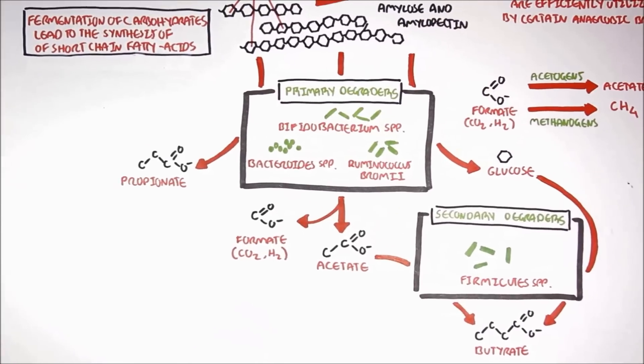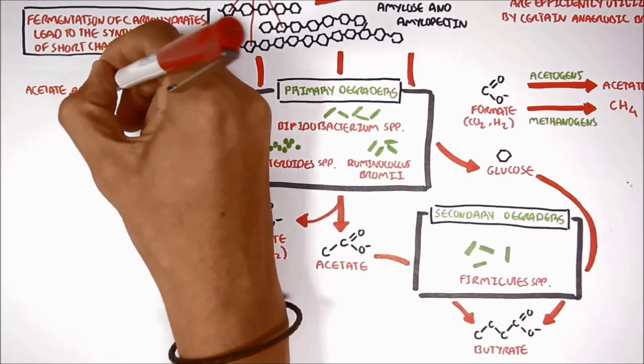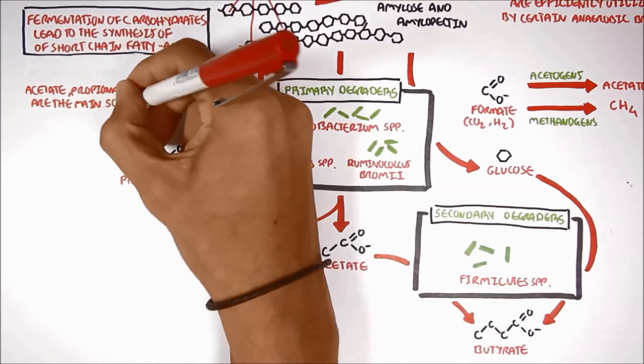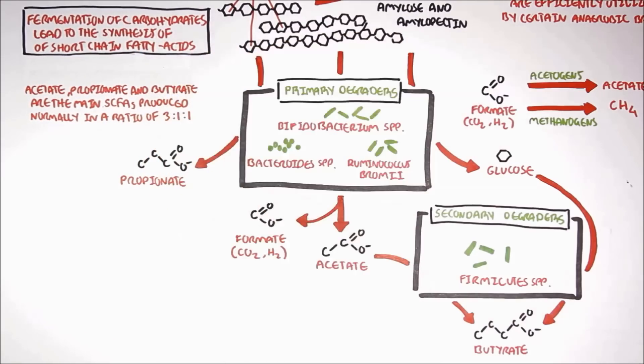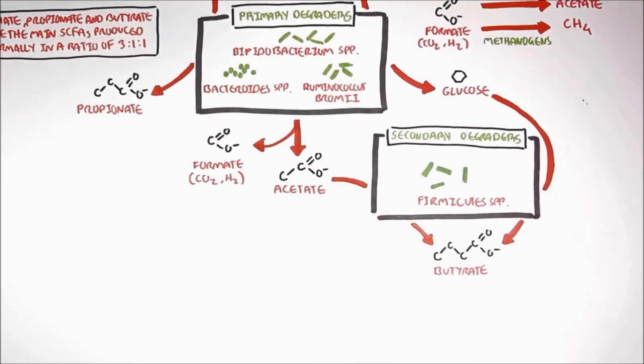So, through the fermentation of starch, acetate, propionate, and butyrate are the main short-chain fatty acids produced, normally in a 3 to 1 to 1 ratio, so more acetate being produced.